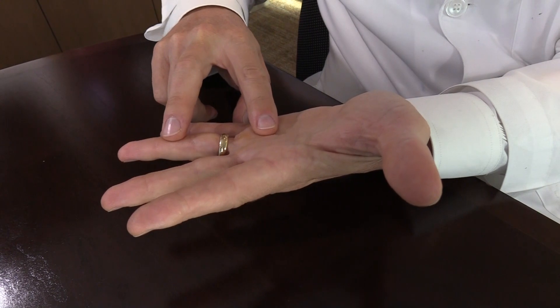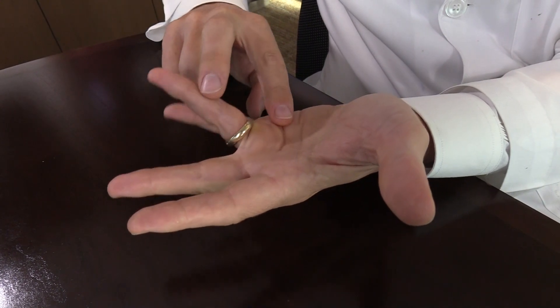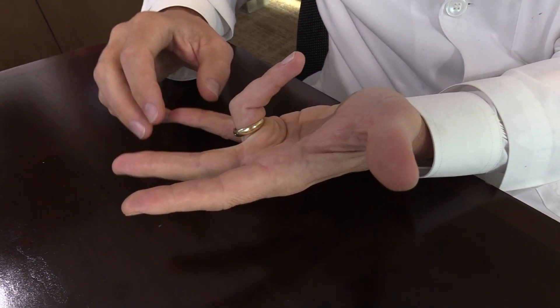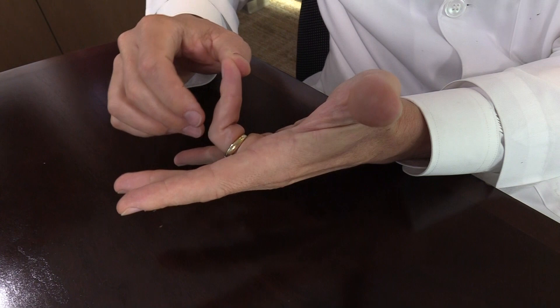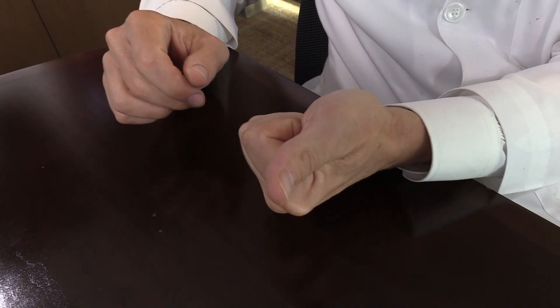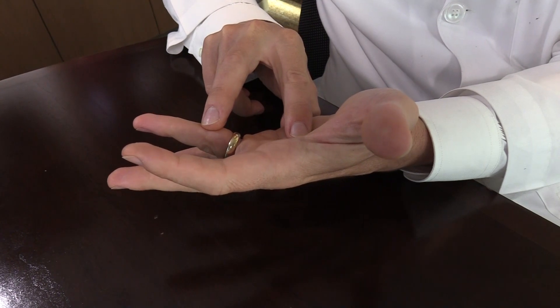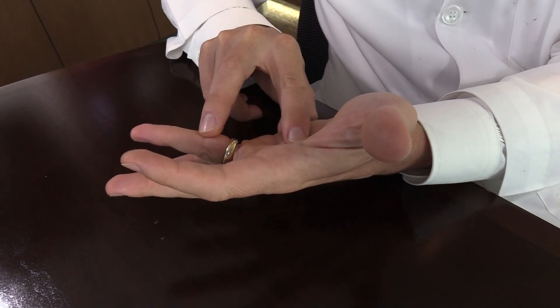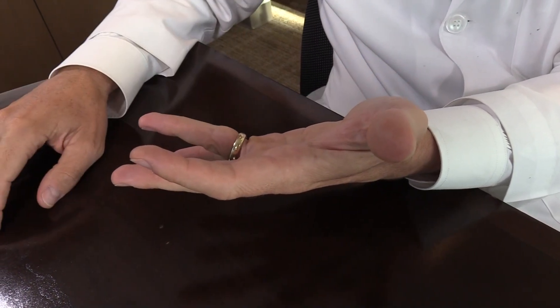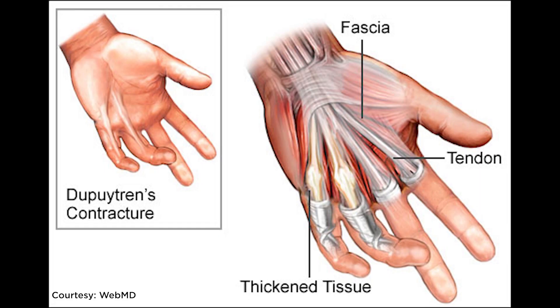The disease can affect any area of the palm and fingers and can cause the fingers to actually draw up, which can compromise function — making it hard to open the hand, put on a glove, or fingers can get caught on things — so it can become fairly debilitating in advanced cases. In early cases it tends to cause nodularity or thickening of areas of the palm that can be painful or tender when gripping or grasping objects.